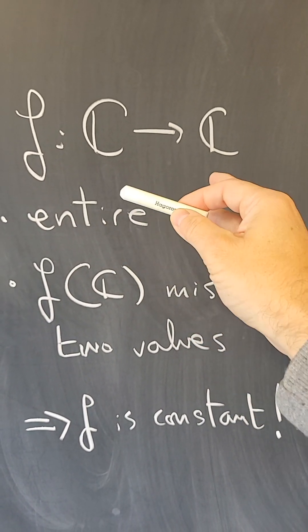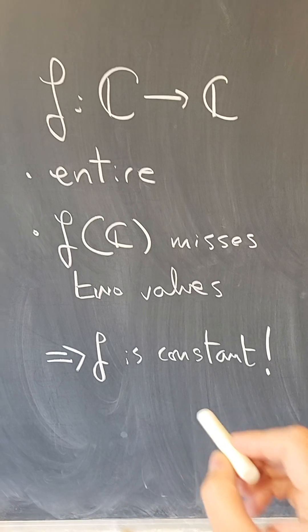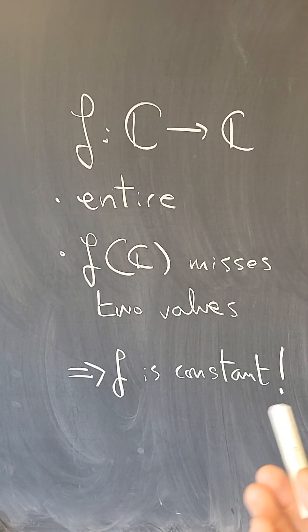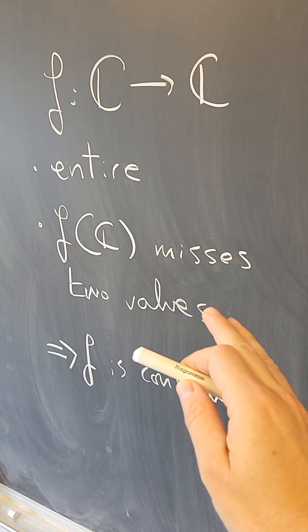or 3 and √2, or i and -i. If it misses two values, then it has to be a constant function. That's so bizarre, and that condition is critical.